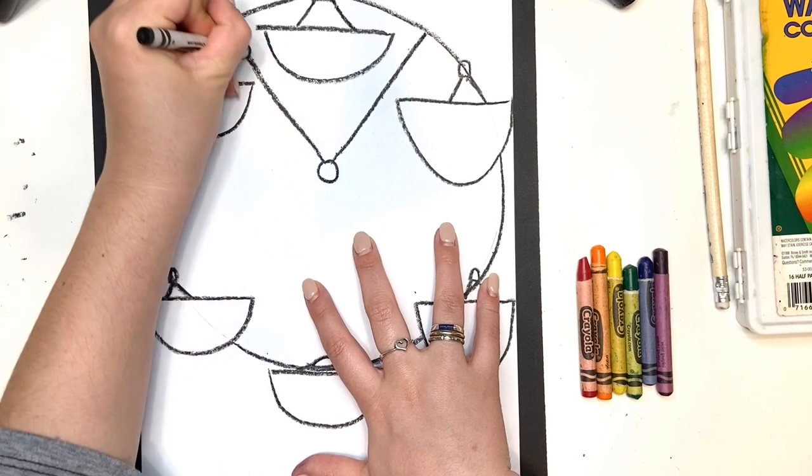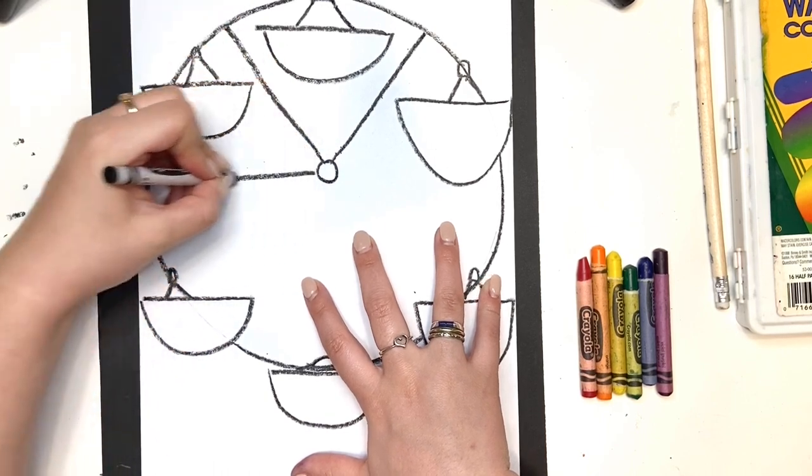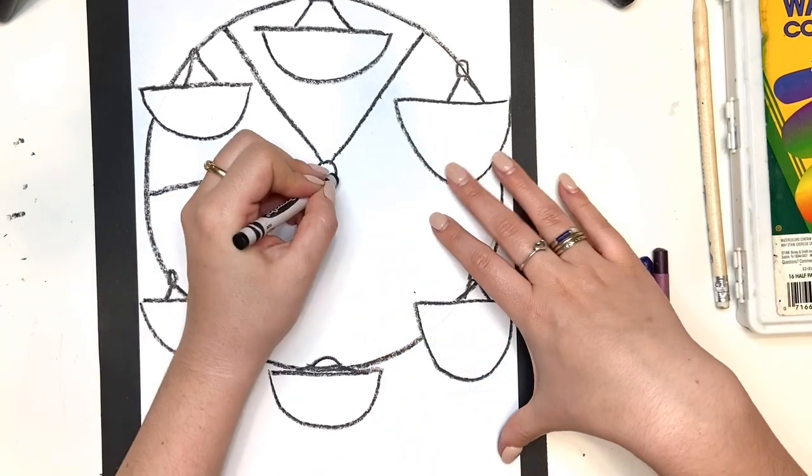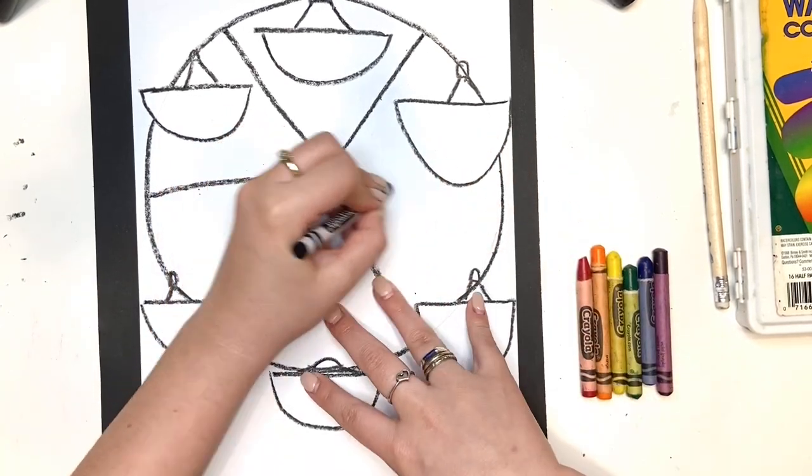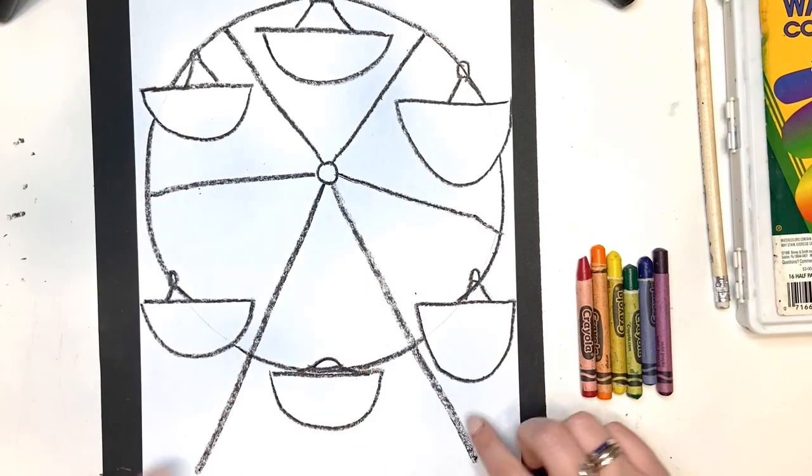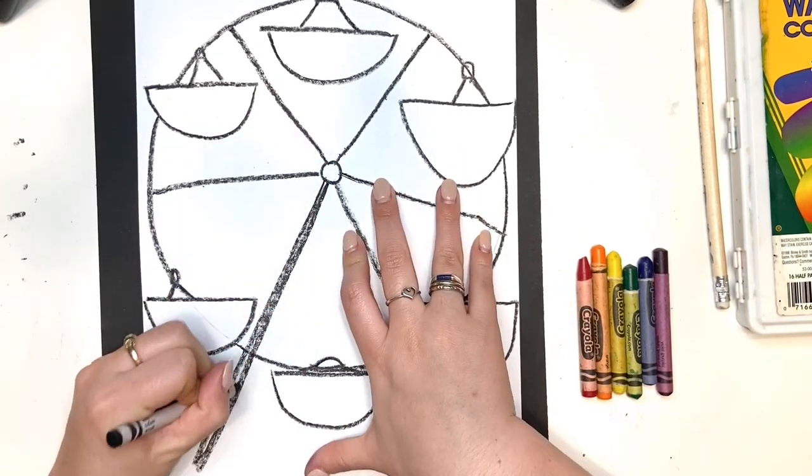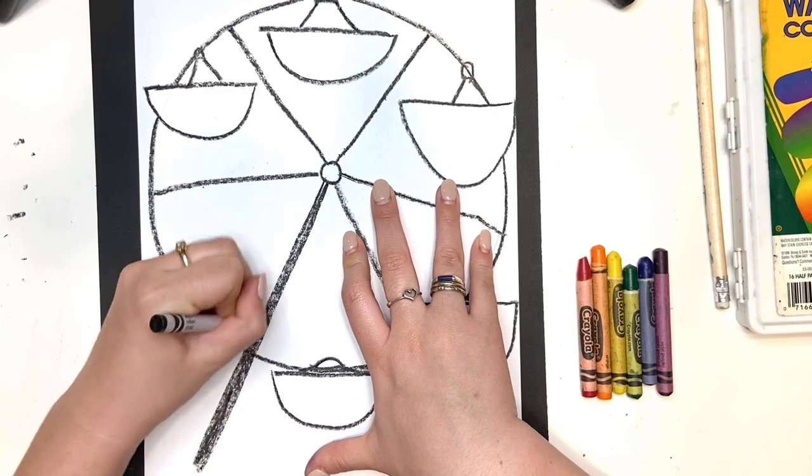Now, we need our spokes. This is what keeps the ferris wheel moving and in place. And these two at the bottom, I'm going to make them longer. And that is what the ferris wheel is standing on, right? If it was on the floor, it would just be a wheel that rolls everywhere. That's not what a ferris wheel is.